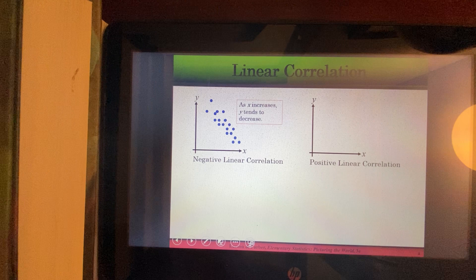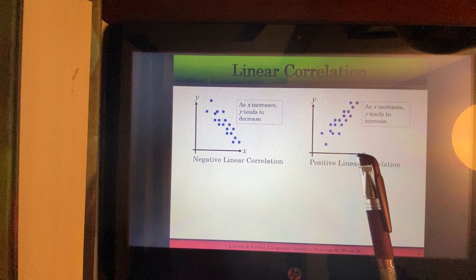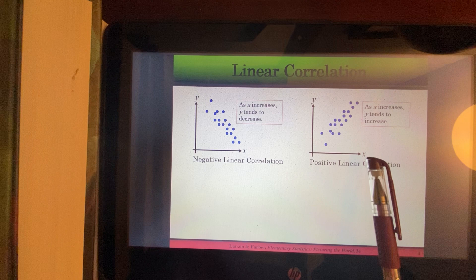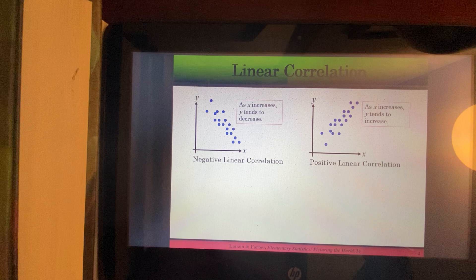Positive linear correlation. As your x increases, your y also tends to increase. Okay, so as we move further to the right, the height of the points goes up. So as x goes up, so does y.